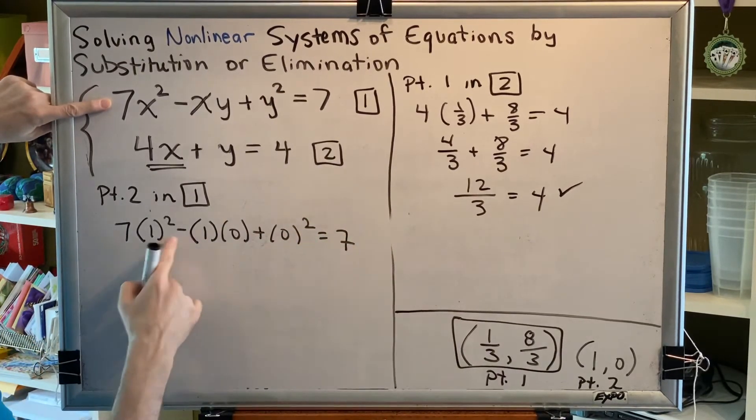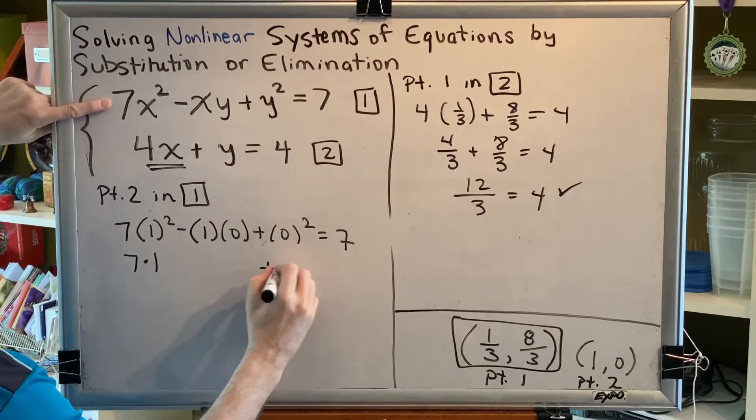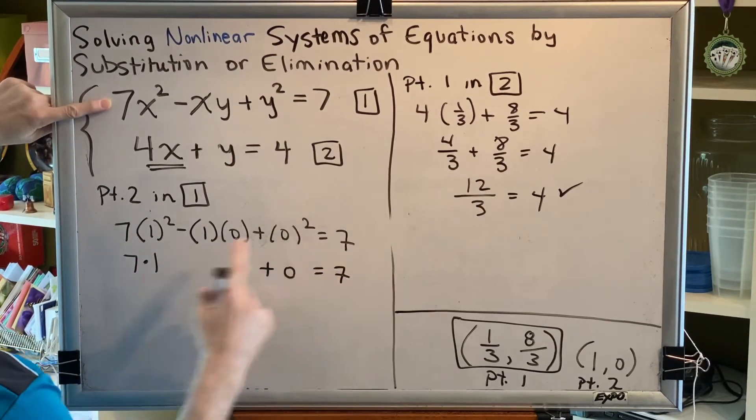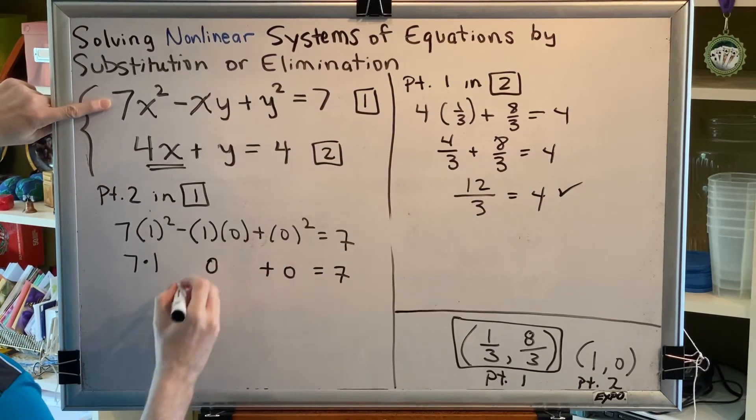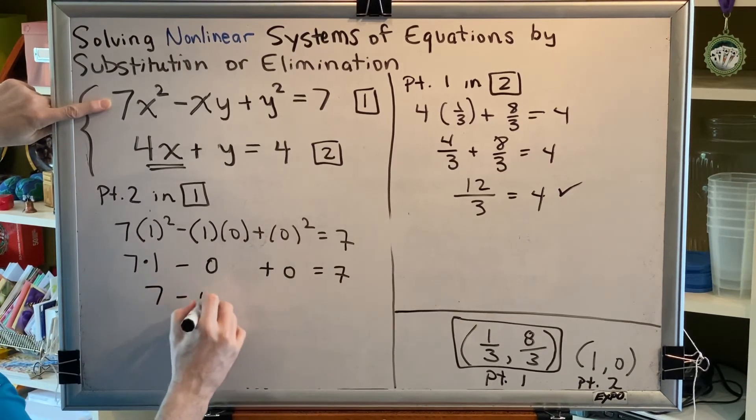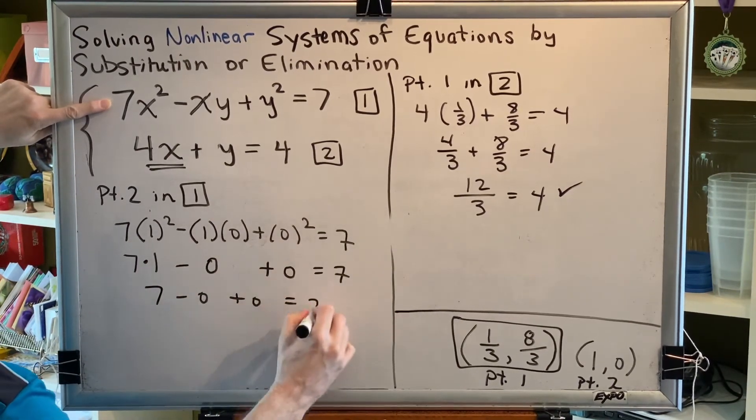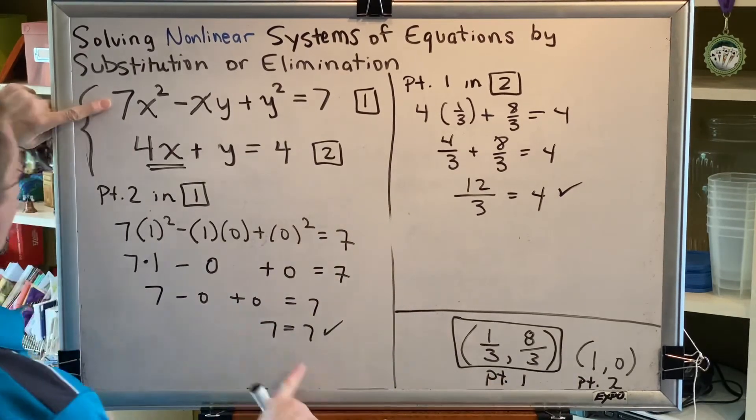Exponents come first. One squared is one. Zero squared is zero. And now that we've dealt with those, we can do the multiplication in the middle. Anything times zero is zero. So we get seven minus zero plus zero equals seven. Seven equals seven. So point two satisfies equation one.